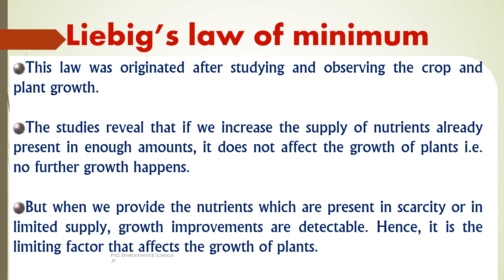Liebig's law of minimum was originated after studying and observing crop and plant growth. This law states that the growth of plants is limited by the nutrient which is in the shortest or least amount, not by the total amount of resources available. Even if other nutrients are abundant, plant growth will be restricted by the one nutrient in the shortest supply — often called the limiting factor.